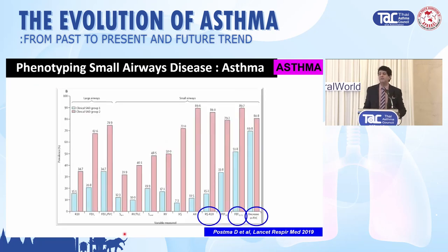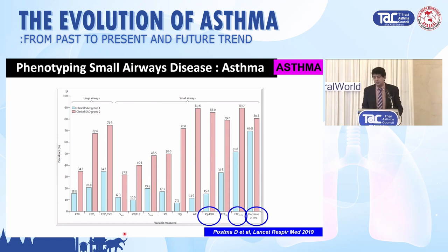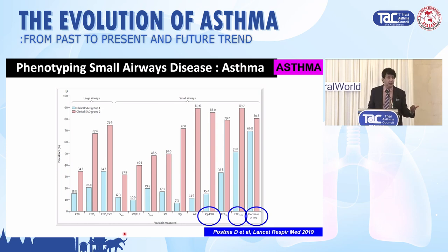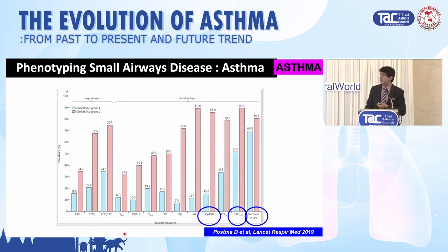What did they find? Looking at the x-axis — a number of measurements — the top two or three that came out very clearly were: R5 minus R20 from oscillometry, FEF 25-75 from spirometry giving an indirect measure of small airways, and FVC. Vital capacity — VC or FVC — gives you an assessment of the small airways, the deep lung.